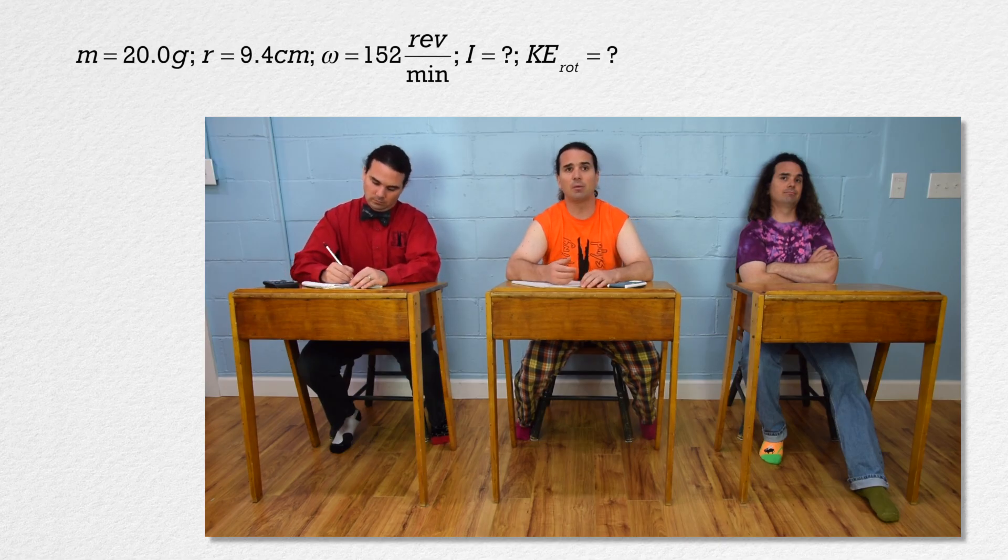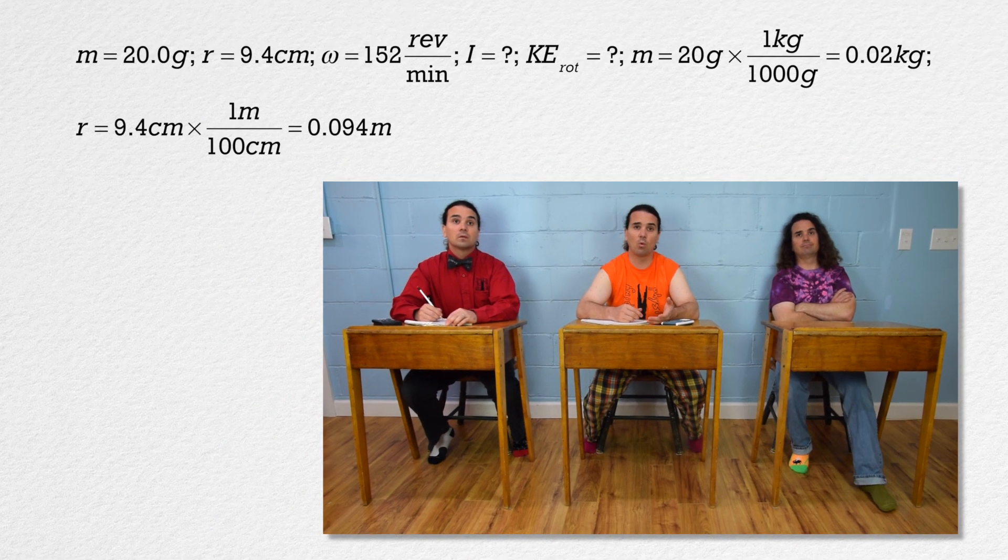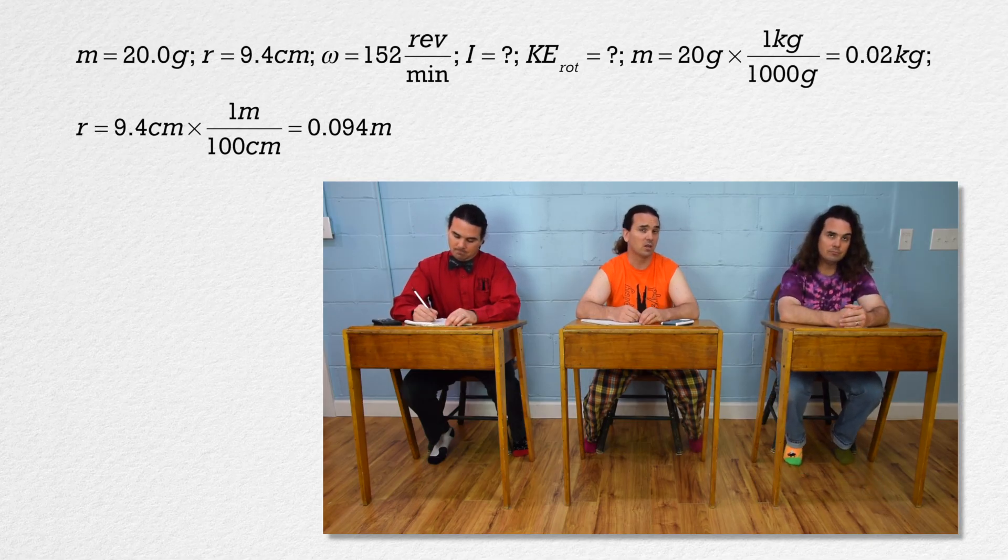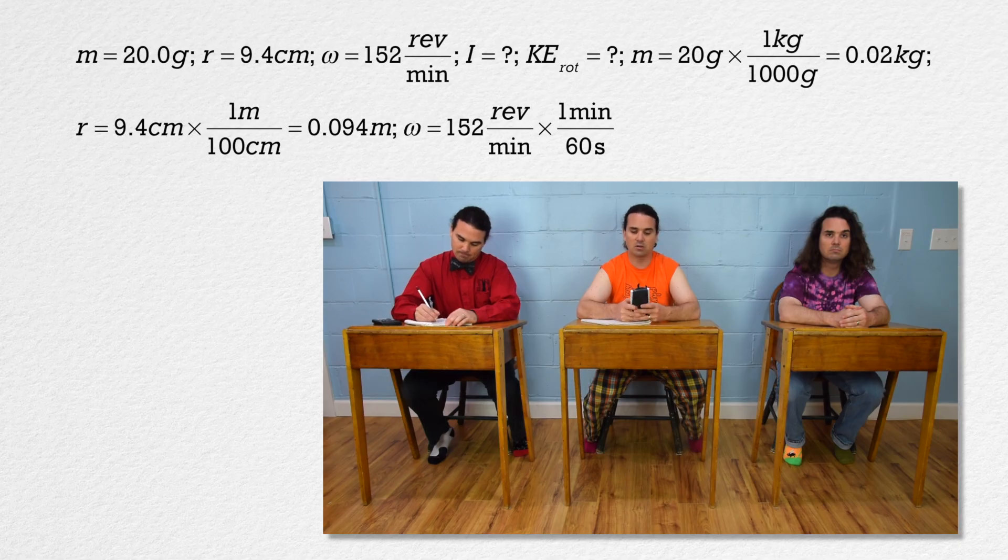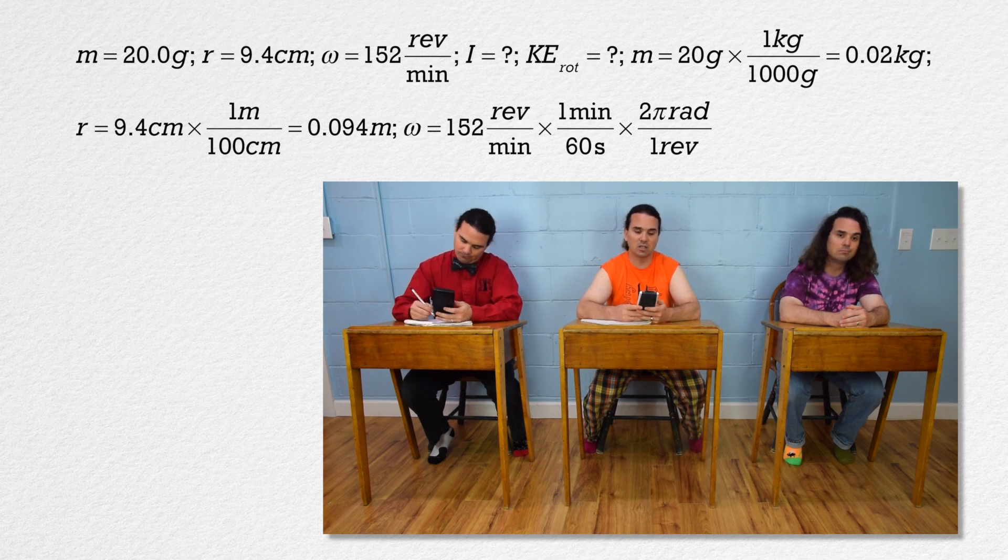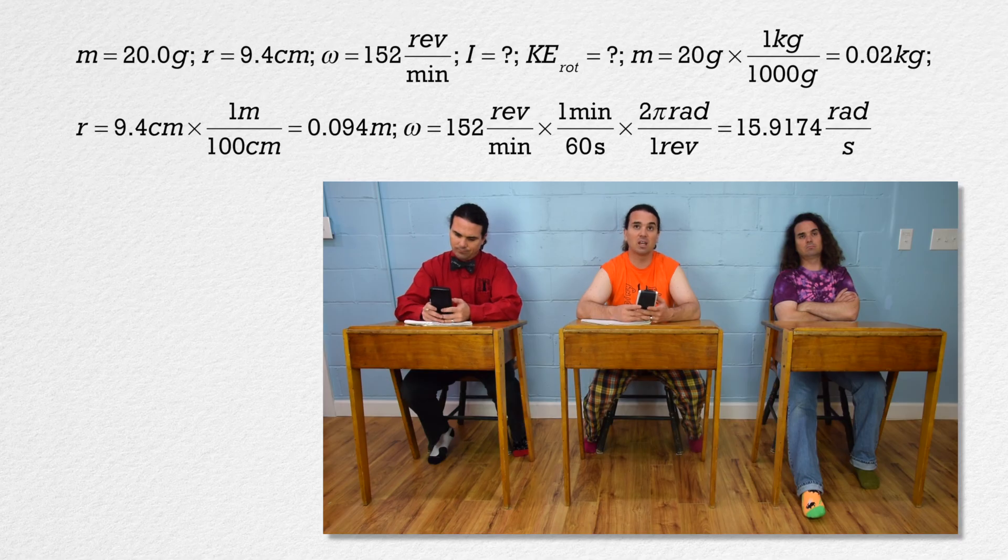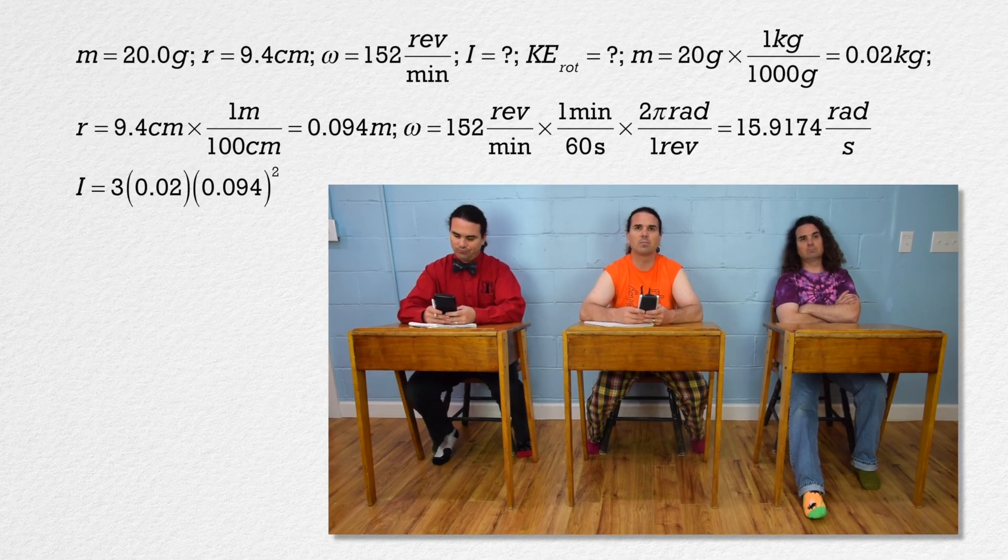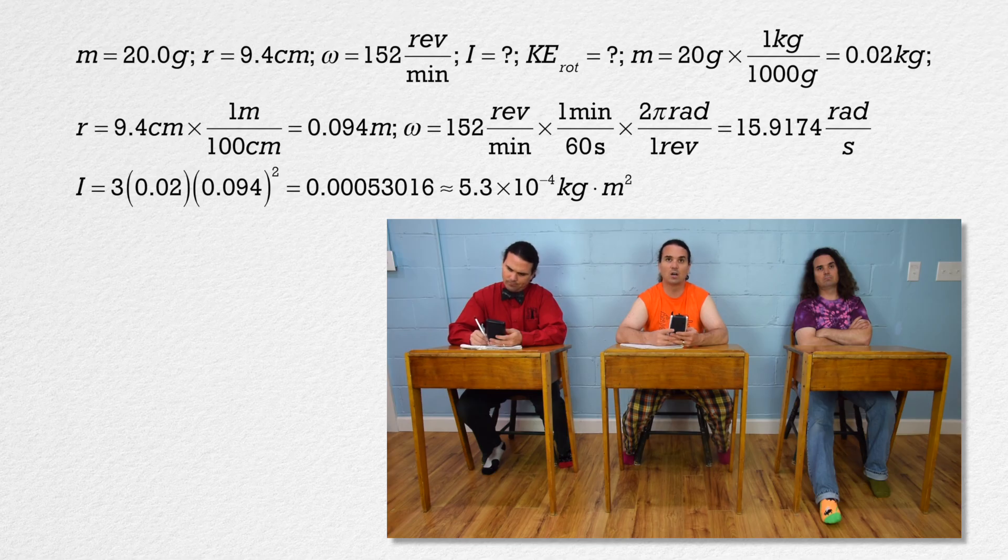Mass equals 20 grams, which we multiply by 1 kilogram over 1000 grams to get 0.02 kilograms. Radius equals 9.4 centimeters, which we multiply by 1 meter over 100 centimeters to get 0.094 meters. Angular velocity equals 152 revolutions per minute. Multiply that by 1 minute over 60 seconds and 2 pi radians over 1 revolution to get 15.9174 radians per second. The moment of inertia then equals 3 times 0.02 times 0.094 squared or 0.00053016 or 5.3 times 10 to the negative 4 kilogram meters squared with two significant digits.